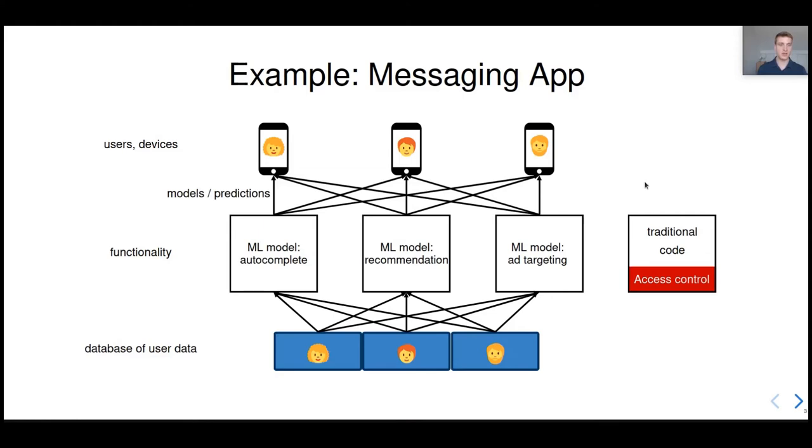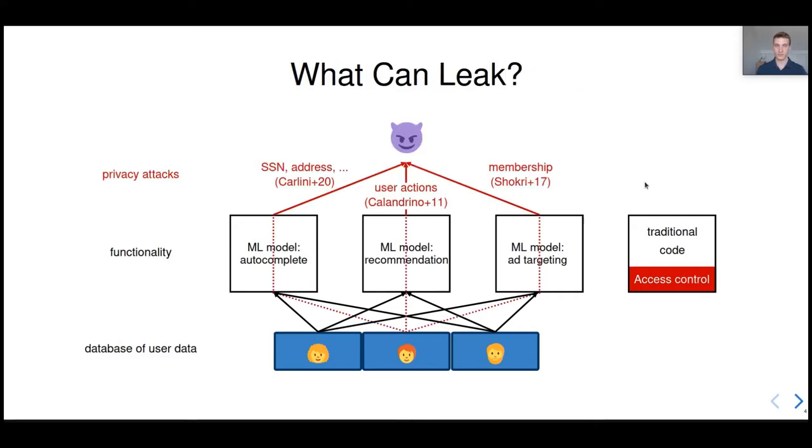The problem is that machine learning models can learn a lot. And of course, they can learn about general trends in the population, which is what we want. However, models can also memorize information about individual users. And with privacy attacks, these models can leak a lot of sensitive information. For instance, if you train a language model on user data, an adversary can use it to recover data, such as the social security number, or the address of some users. And there are a lot of attacks for different types of models. So we would like to have something like access control, but for machine learning. And it's a bit less straightforward how to implement it.